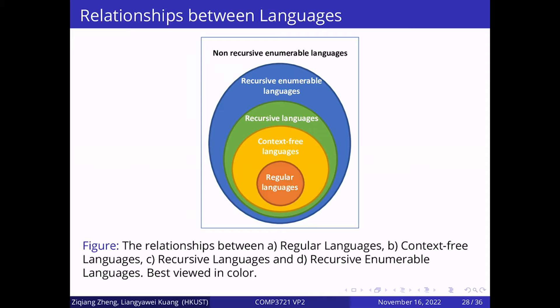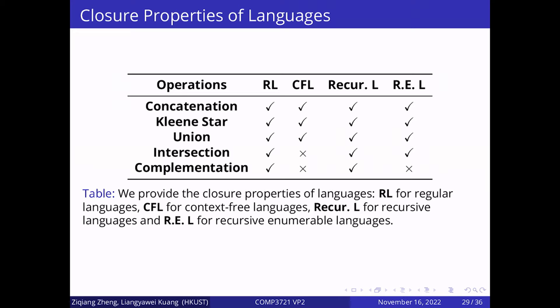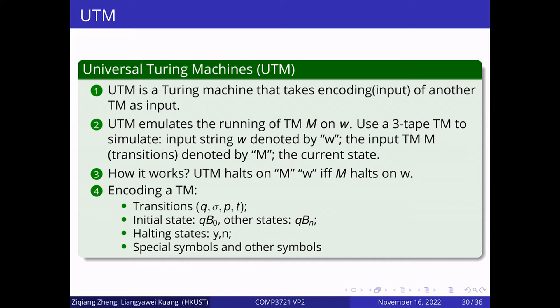We take a review of all the languages we have learnt in this course and provide the relationships between them in this figure, best viewed in color. Furthermore, we review the closure property of the mentioned languages under the five operations in the following table. The regular languages and recursive languages are closed under all five operations. The context-free languages are not closed under the intersection or complementation operations. The recursively enumerable languages are not closed under the complementation operation.